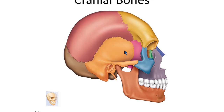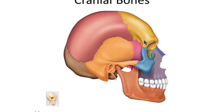Beginning with the frontal bone — the frontal bone is the bone of the forehead, found on the front side of the skull. You'll find sutures that separate the different bones we're going to talk about, because these bones fuse by age two to become one interconnected set of flat bones protecting the brain. The bone of the forehead is the frontal bone.